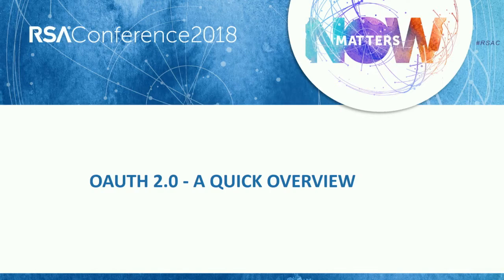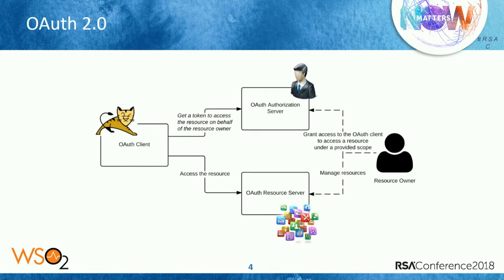Before we delve deep into OAuth threat vectors, let's do a quick recap just to make sure all of us are on the same page. OAuth 2.0 is an authorization framework. If you are familiar with OAuth 1.0, OAuth 1.0 is a concrete, specific protocol to address the access delegation problem on the web. OAuth 2.0 is an authorization framework — it's extensible and you can extend it to address your enterprise use cases.